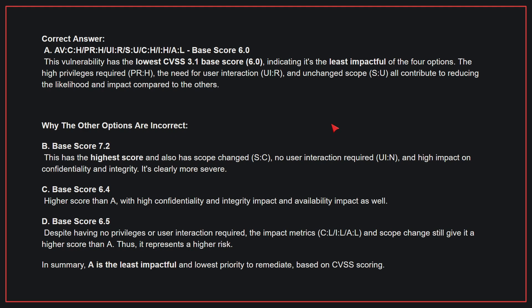Why the other options are incorrect: B — base score 7.2. This has the highest score and also has scope changed, no user interaction required, and high impact on confidentiality and integrity — it's clearly more severe. C — base score 6.4. This has a higher score than A, with high confidentiality and availability impact as well. D — base score 6.5. Despite having no privileges or user interaction required, the impact metrics and scope change still give it a higher score than A, representing a higher risk. In summary, A is the least impactful and lowest priority to remediate based on CVSS scoring. Therefore, the correct answer is A.